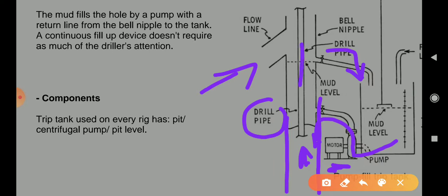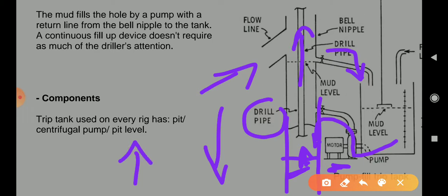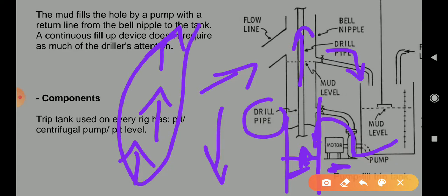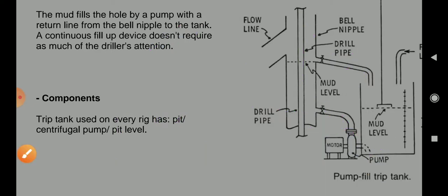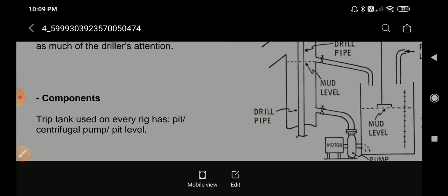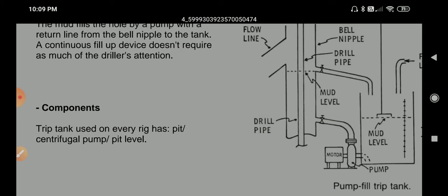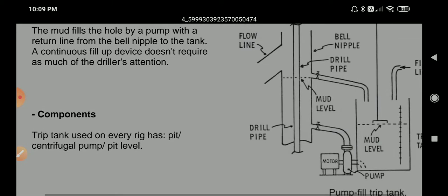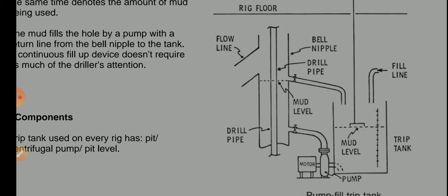Whenever you pull out a stand, the volume of mud in the annulus comes down, so the level decreases. When the level decreases, the formation will try to push upward. To avoid this, we send the required amount of mud using the small pump. This small tank used for this purpose is called the trip tank. There is also a fill line available alongside it.